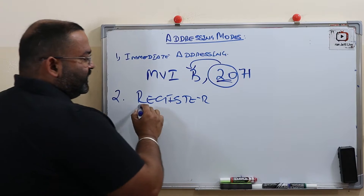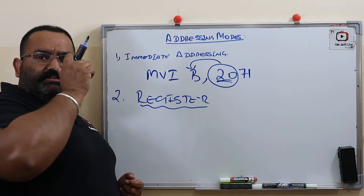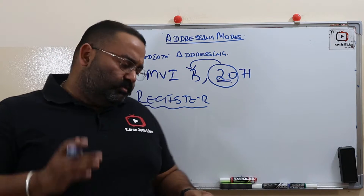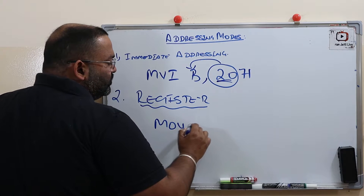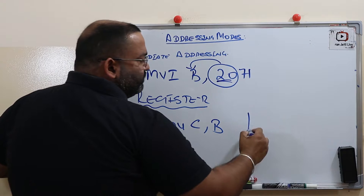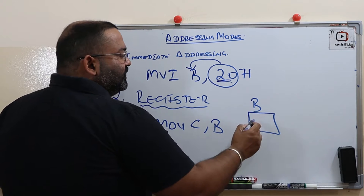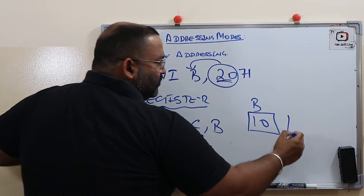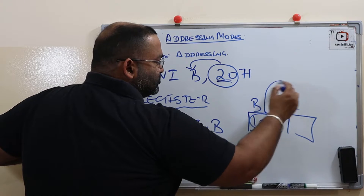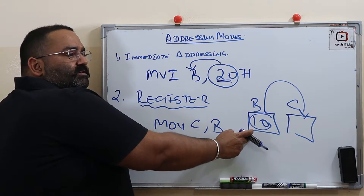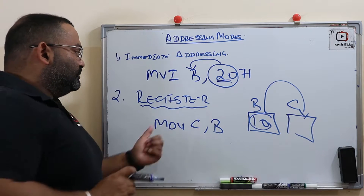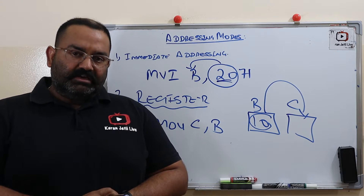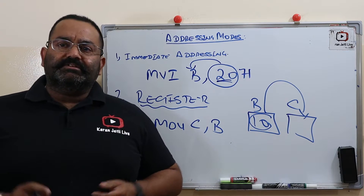The next type is called register addressing. In register addressing, your data is in the CPU registers. For example, MOV C, B — move the contents of CPU register B to CPU register C. Because CPU registers are involved, we call it register addressing.